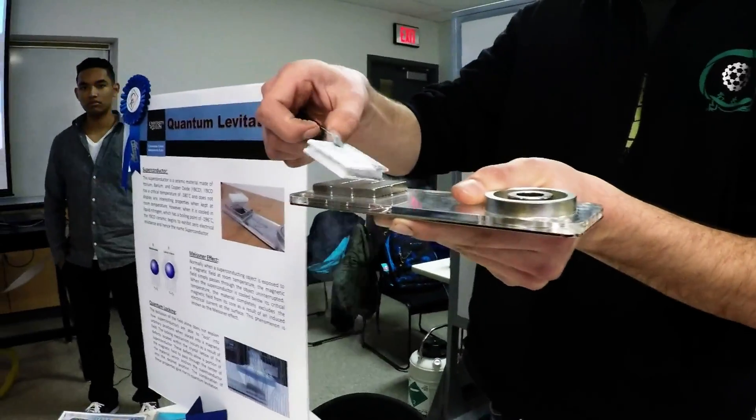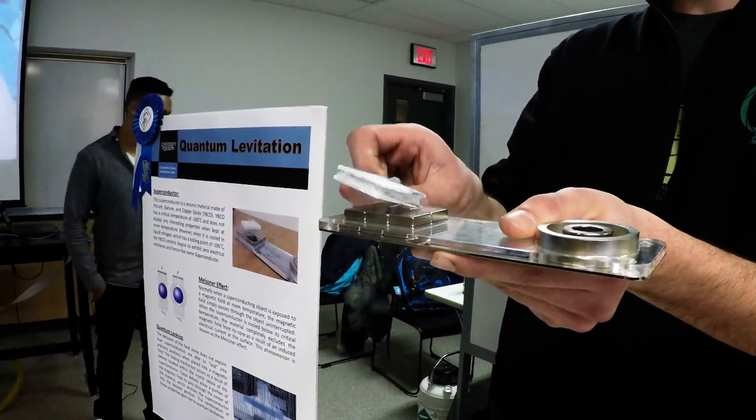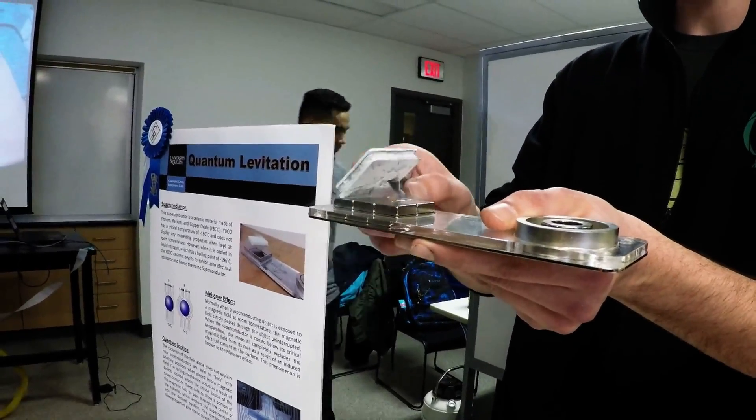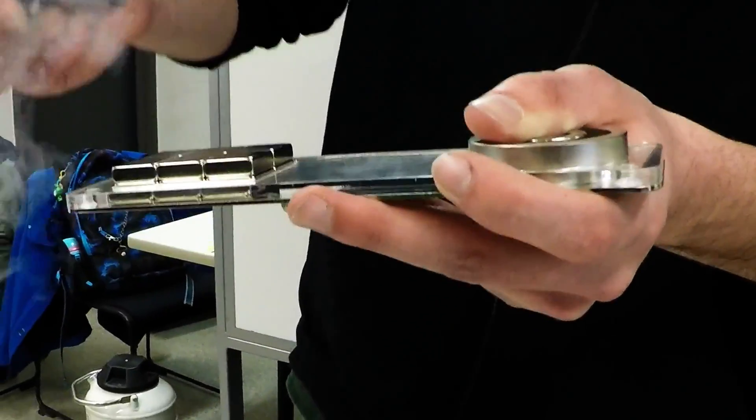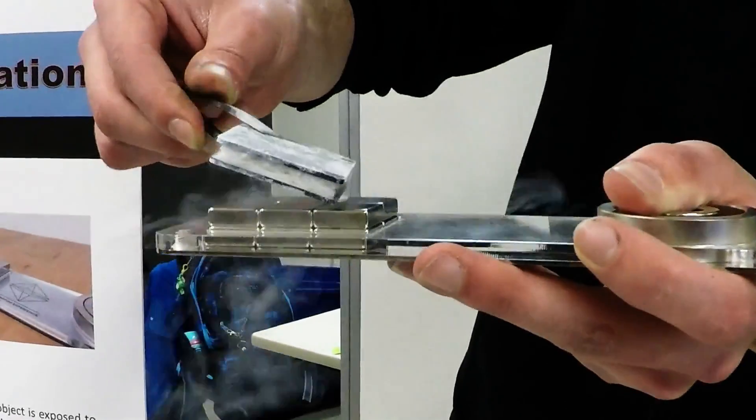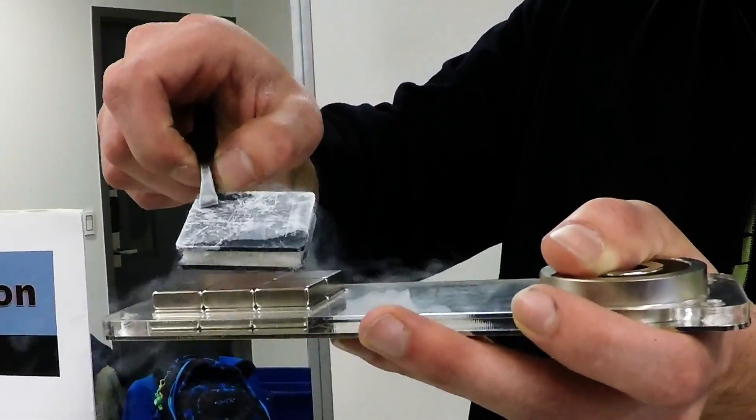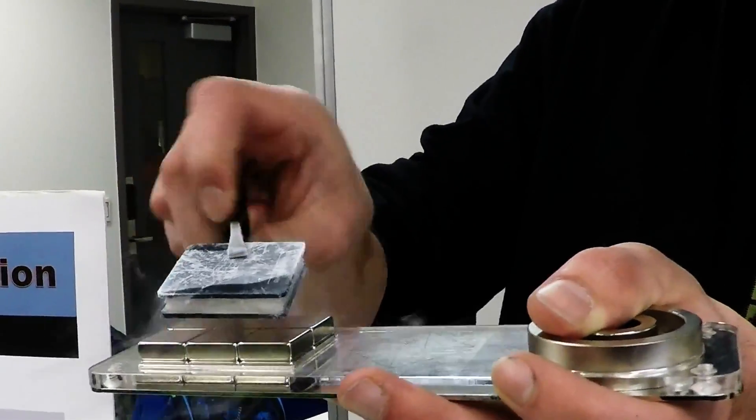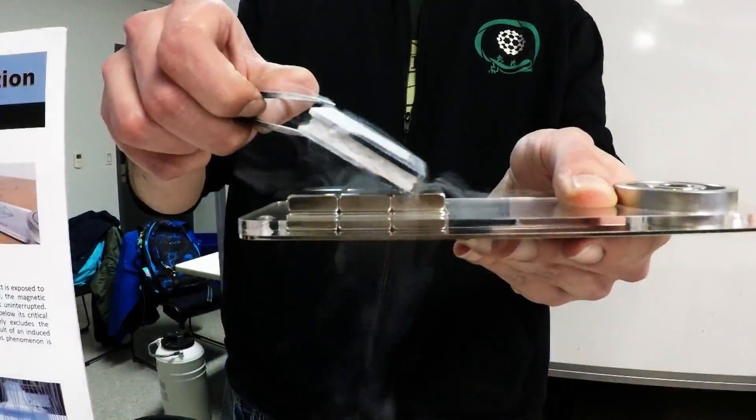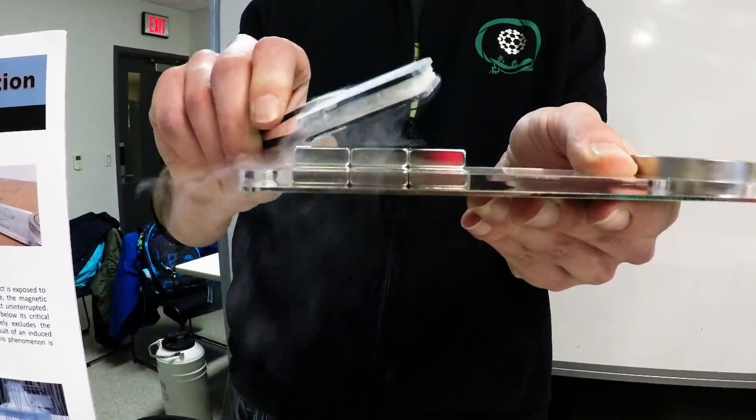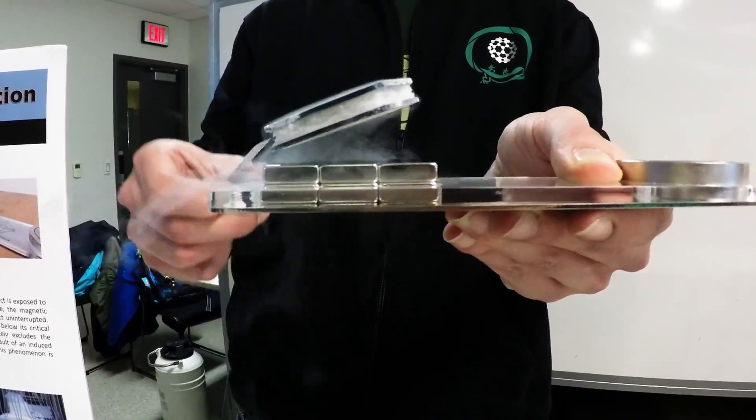I can place it however I want in the magnetic field and it will remain locked wherever I place it. I can lock it in almost any position that I want. So let's say I want it locked on this angle. I can lock it like that. It all depends on how I place it above the magnetic field and it will stay there. Then I can just put it the other way, and it will just stay like that.